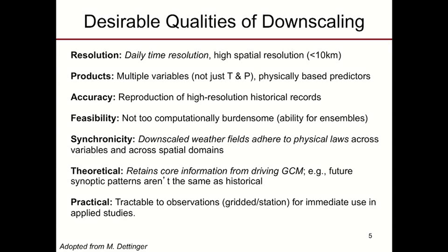Downscaling provides a means to translate GCM signals down to the scales usable for applied climate work. There are over 6 million different ways to downscale climate data, which we don't have time to thoroughly discuss in detail here. While some downscaling methods may be perfectly fine for certain applications, other applications may require more advanced downscaling methods.